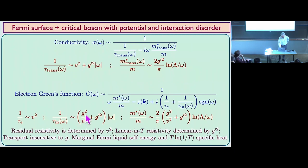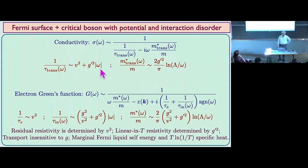However, when you compute the conductivity you get a very nice set of results. The Green's function has an inelastic scattering rate that comes from both G and G-prime — G is spatially uniform, G-prime is spatially random. Looking at the transport: this is the usual Drude term from G-squared, but the G-prime now gives you a mod-omega at zero temperature and something that's linear in temperature at finite temperature. Correspondingly, in the optical mass there's a logarithmic frequency dependence.